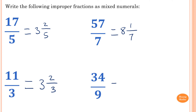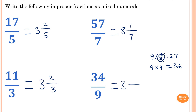For 34 over 9 — how many lots of 9 go into 34? We know 9 times 3 is 27 and 9 times 4 is 36, so it's 3 times. The remainder is 34 minus 27, which is 7. So 34 over 9 equals 3 and 7 ninths.